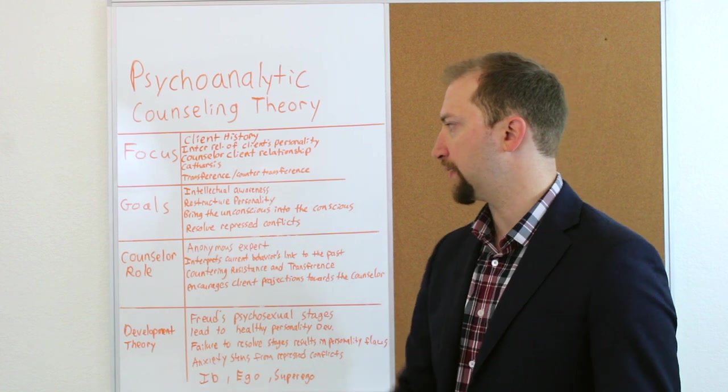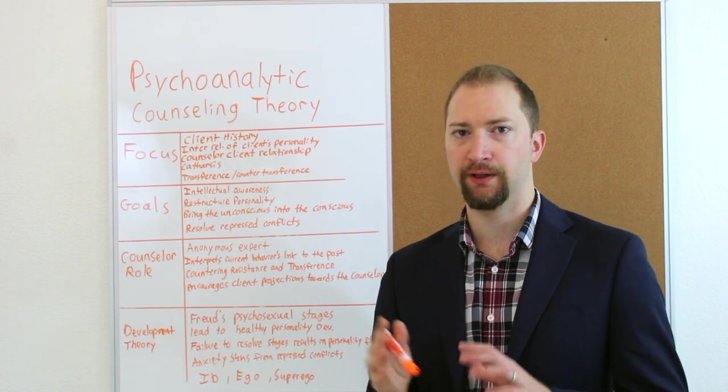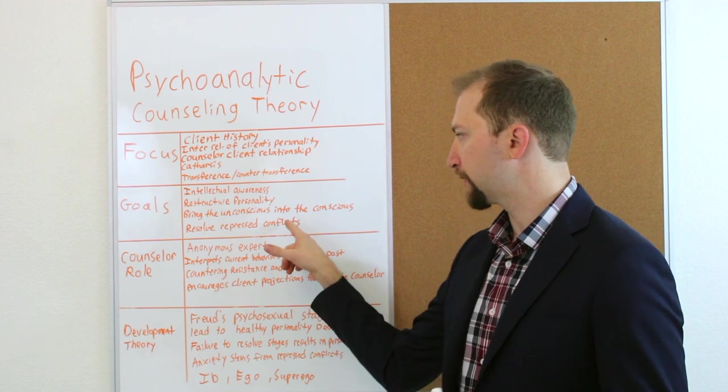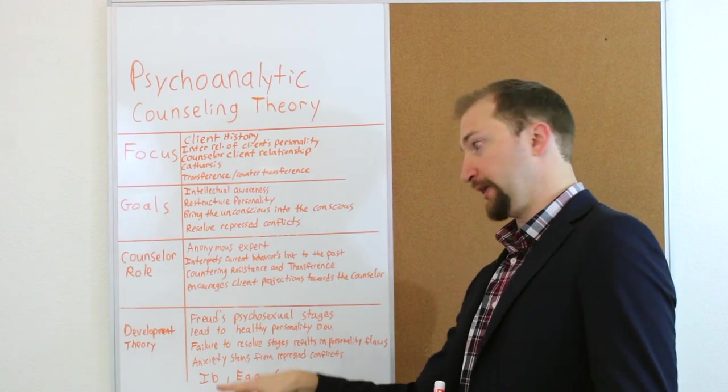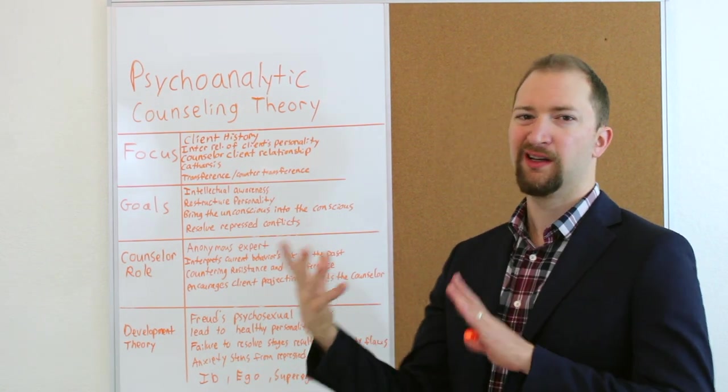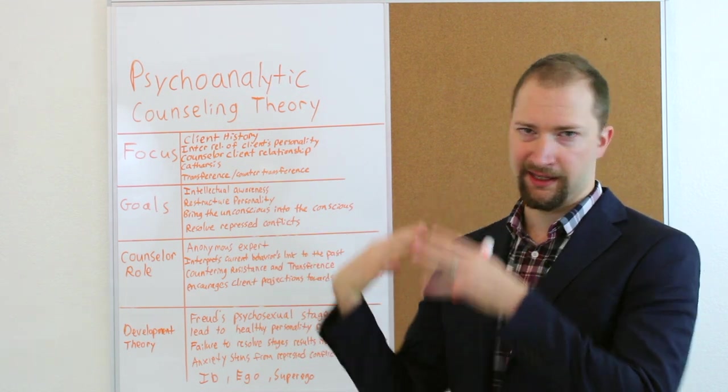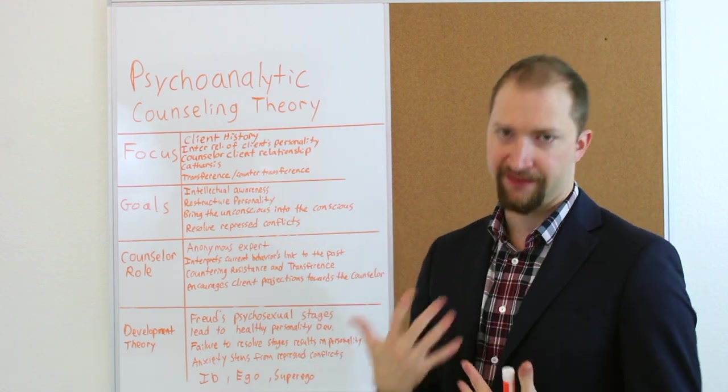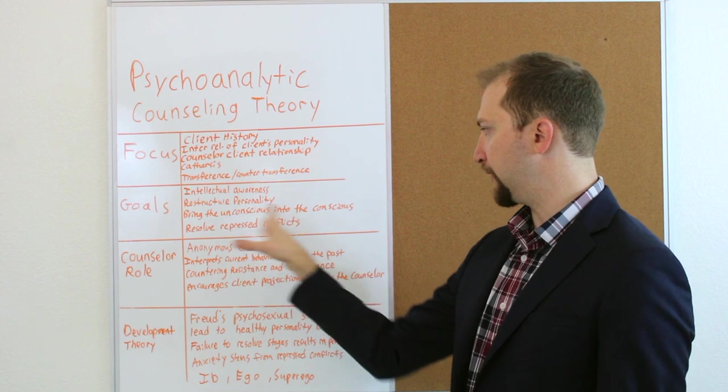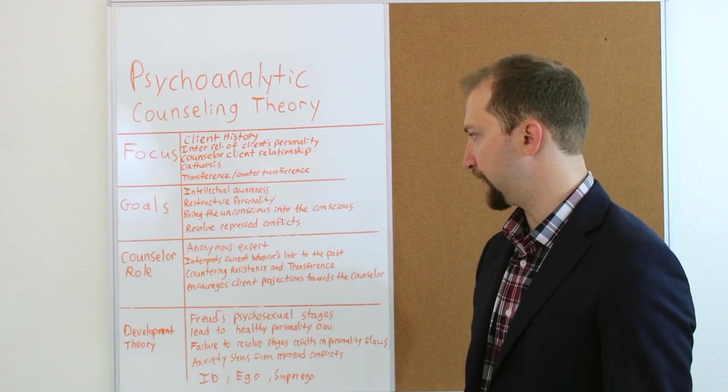And the last one is resolve repressed conflicts. When we refer to conflicts, what they're talking about is id, ego, superego, and how those are at conflict and that's not resolved. And you have unresolved feelings. And that's a problem in this theory.